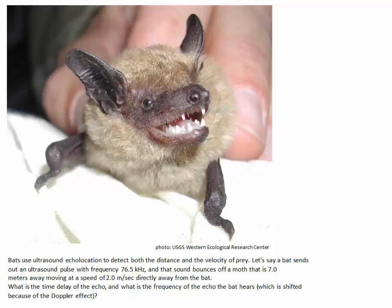The sound bouncing off the moth is also Doppler shifted because of the motion of the moth. And so the bat hears a frequency that is different than the frequency that the bat emitted. From that change in frequency, the bat can determine whether the moth is coming towards it or away from it and how fast.